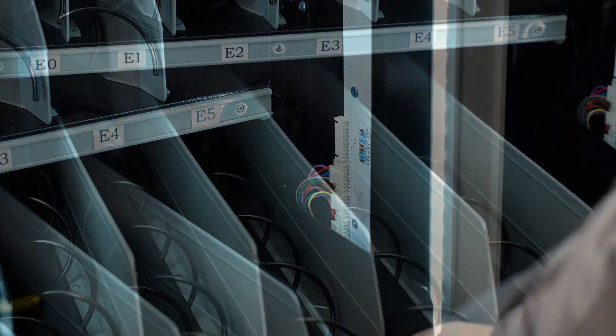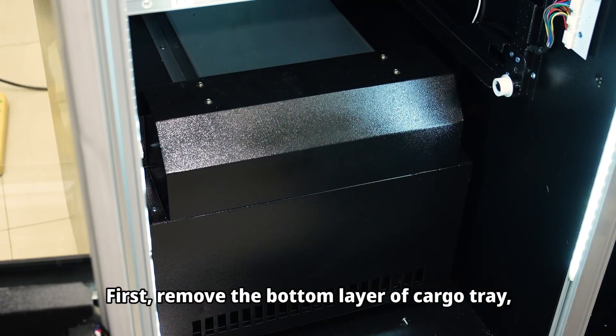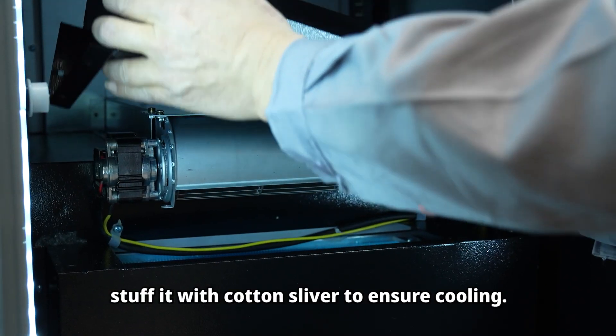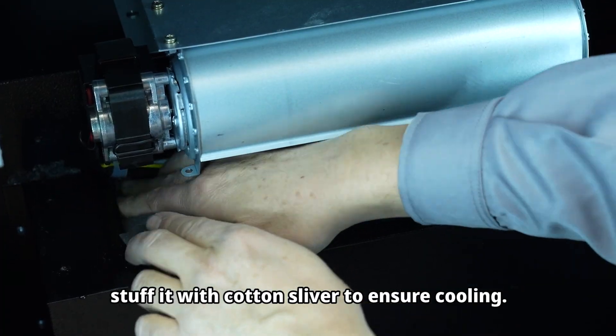Evaporator cover problems: First, remove the bottom layer of cargo tray and then remove the evaporator cover. Stuff it with cotton silver to ensure cooling.